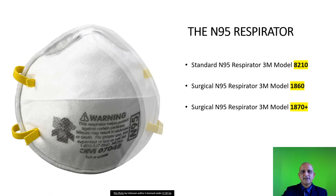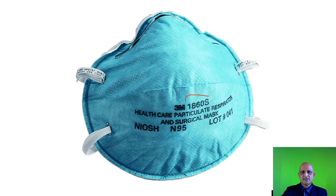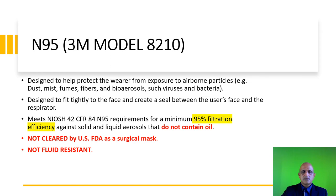The N95 respirator is available in different models: the 8210, the 1860, and the 1870+. The 1860S protects you against particulates and can also be used as a surgical mask. The 3M model 8210 is designed to protect the wearer from exposure to airborne particles which include dust, mist, fumes, fibers, and bioaerosols such as viruses and bacteria. This respirator can also be used to protect the user against non-biological agents such as dust and other airborne particles.